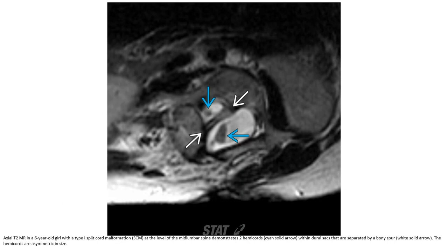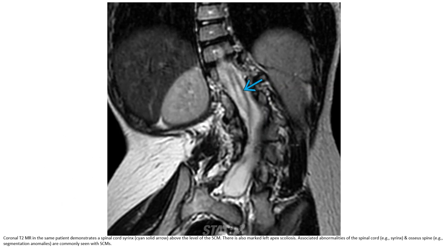This is a case of a 6-year-old girl with type 1 split-cord malformation at the level of the mid-lumbar spine. The patient demonstrates two hemichords within dural sacs that are separated by a bony spur. The hemichords have symmetric appearance. This is the T2 MRI.